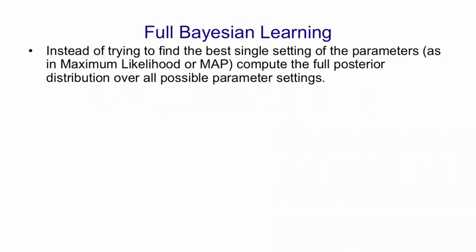In full Bayesian learning, we don't try to find a single best setting of the parameters. Instead, we try to find the full posterior distribution over all possible settings. That is, for every possible setting, we want a posterior probability density, and all those densities we want to add up to one.